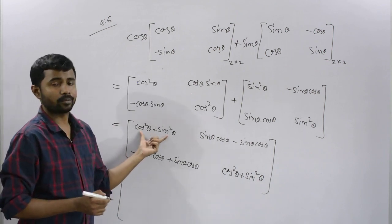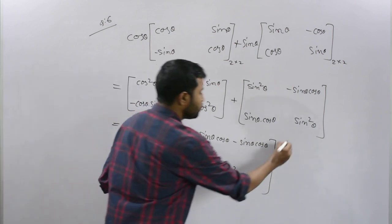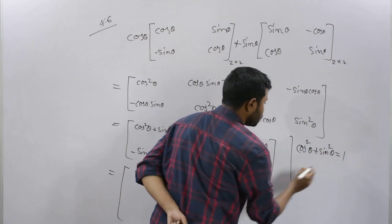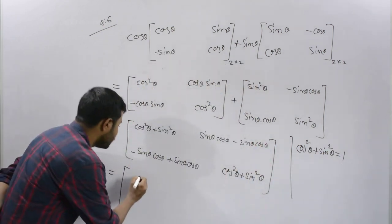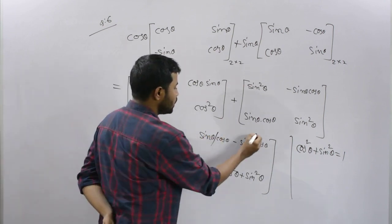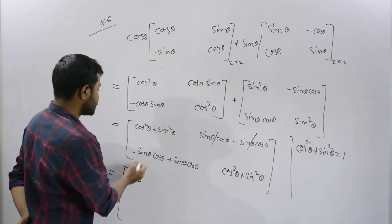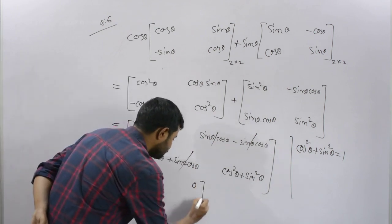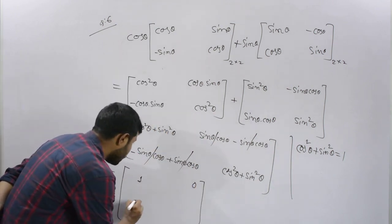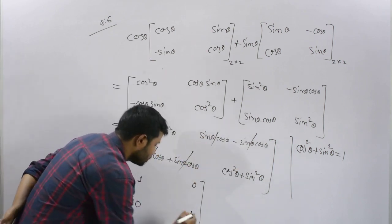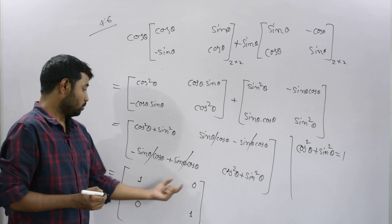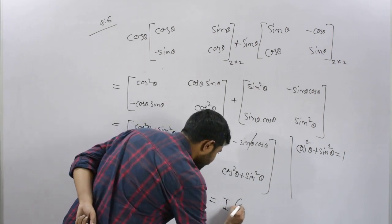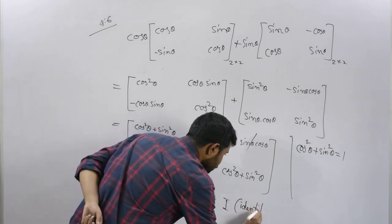This is a trigonometric identity: cos squared theta plus sin squared theta is always equal to 1. So the value is 1. The off-diagonal sin theta terms cancel to give 0. That means the A squared matrix equals [1, 0; 0, 1], which is the identity matrix I.